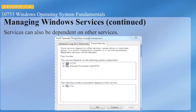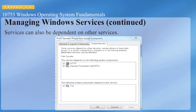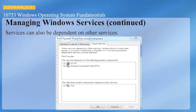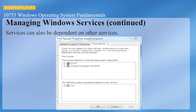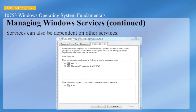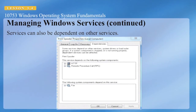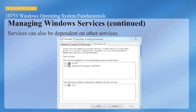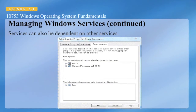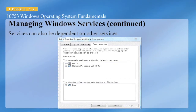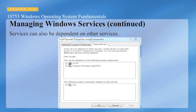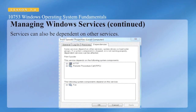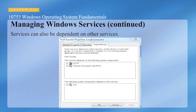Services can be dependent on other services and vice versa. If a dependent service fails, the related service will fail as well. For example, looking at the Print Spooler, the service depends on HTTP and Remote Procedure Call, and the Fax service depends on Print Spooler.